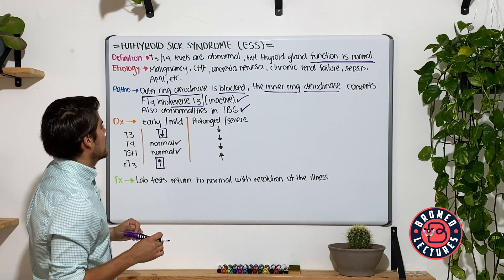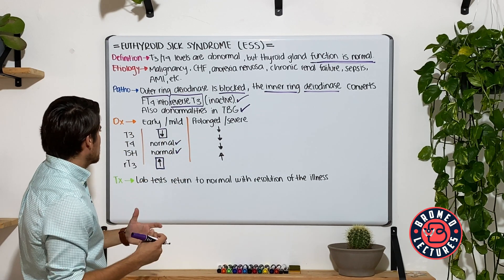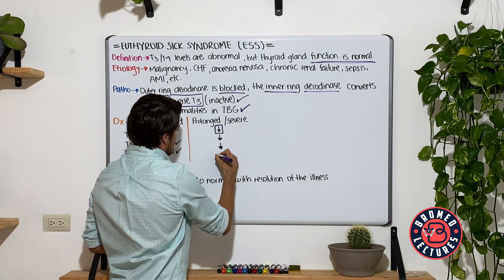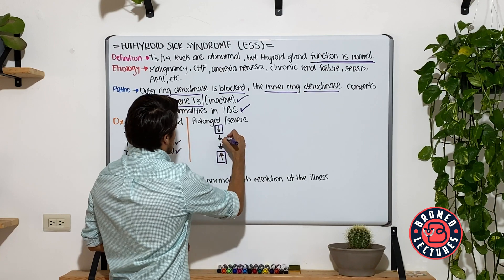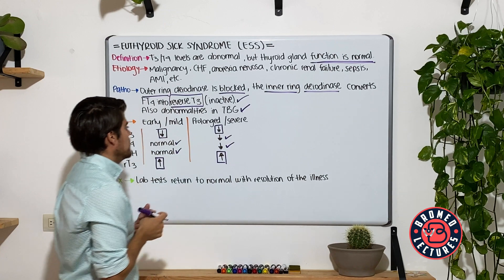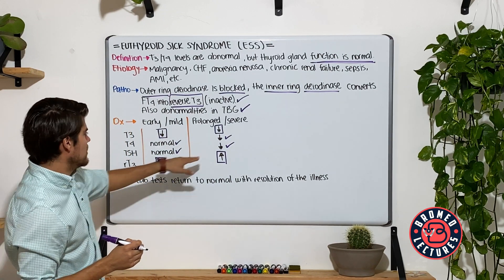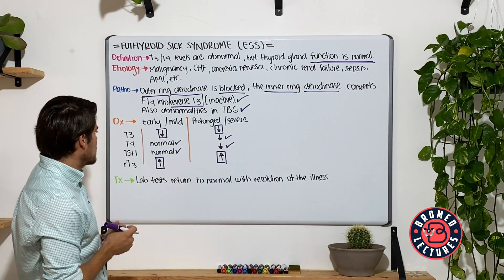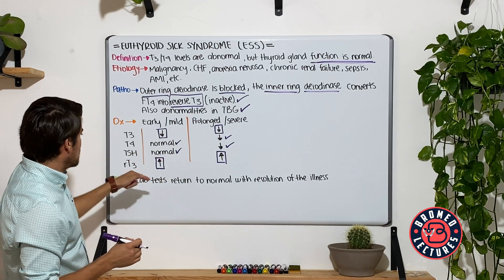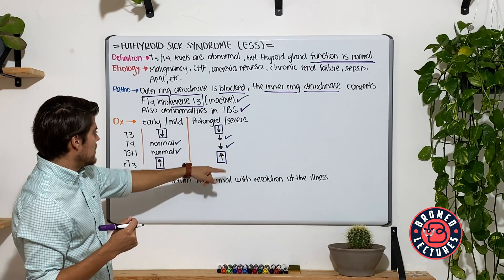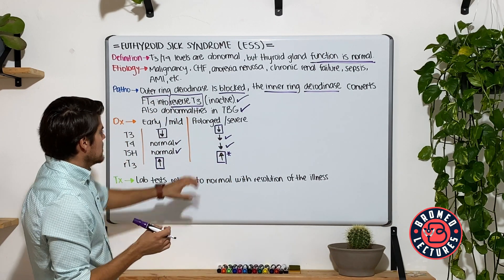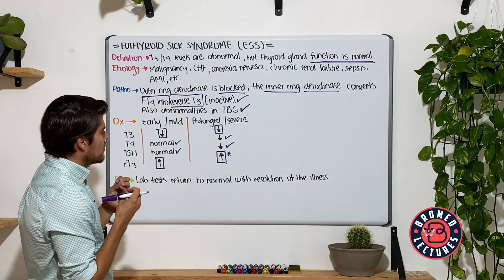If the disease is long enough or severe enough, T3 is still going down and reverse T3 is still going up, but now neither T4 nor TSH are able to keep up. The TSH finding is particularly remarkable — if you have a hypothyroid state, why is the TSH not compensating? It may be due to the effect of reverse T3 on the anterior pituitary, but this pathology is not well elucidated.